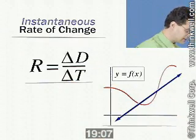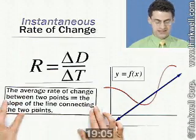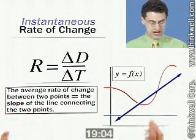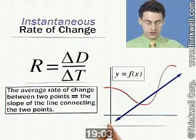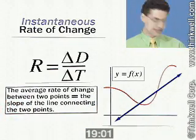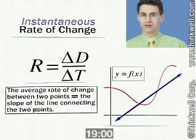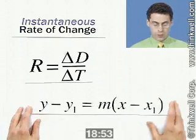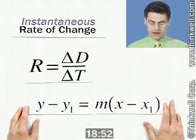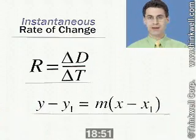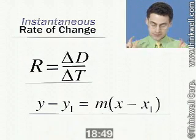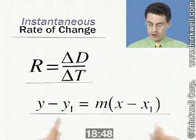We see that the average rate of change between two points is equal to the slope of the line connecting them. By the way, what about lines? Let me remind you about lines. The equation is y minus y₁ equals m times x minus x₁ — this is the point-slope form.